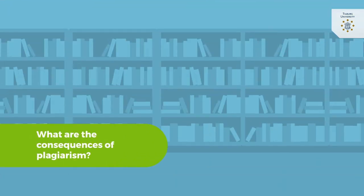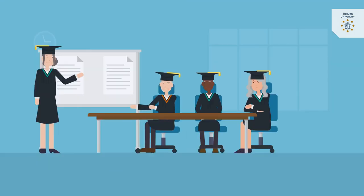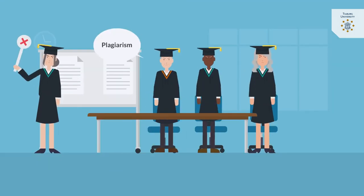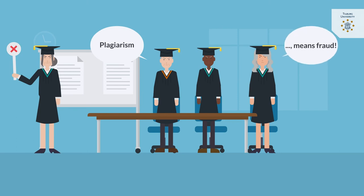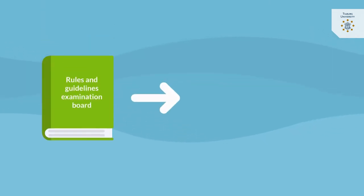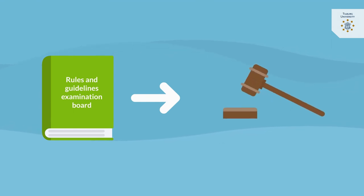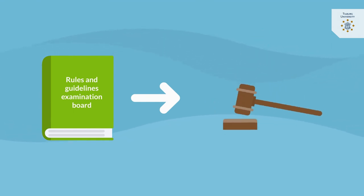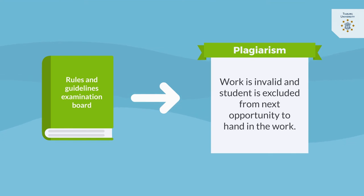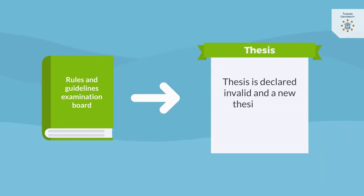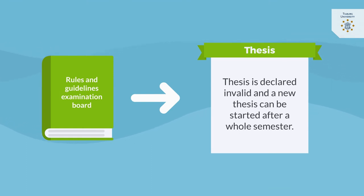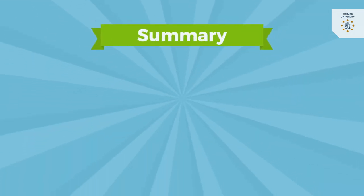What are the consequences of plagiarism being established? Plagiarism is a violation of the academic attitude. If the examination board judges the reported suspicion as plagiarism, according to the rules and guidelines for the examination board, it can decide to impose a sanction. In principle, the work is declared invalid and the student is excluded from the next opportunity to hand in the work. In the case of a thesis, it is declared invalid and a new thesis can only be started after a waiting period of a whole semester. So make sure to prevent that.